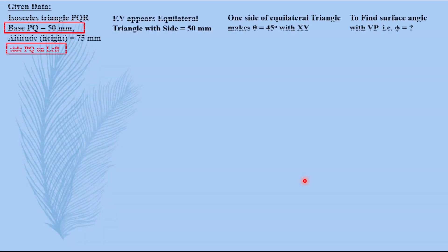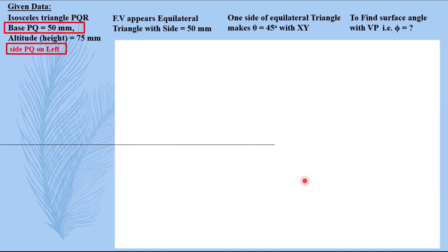Now let us draw the actual 2D solution. XY line, taking a projector, taking some distance, taking a point P dash on it. Now this distance is not mentioned in our question. It is also not mentioned that any of the point is on HP. So you have to keep this point away from XY line.